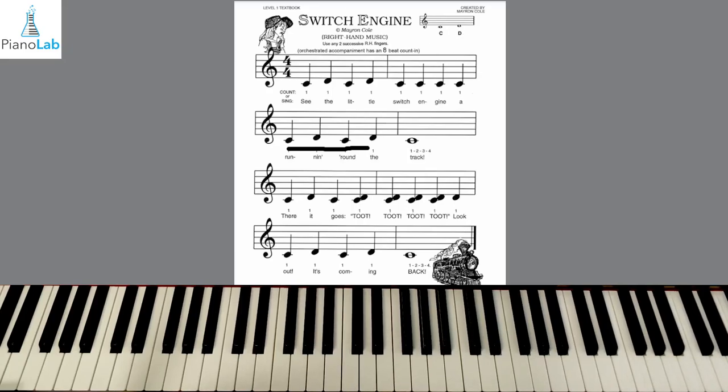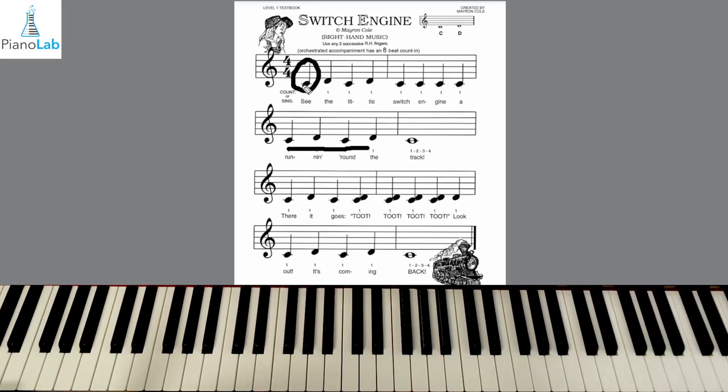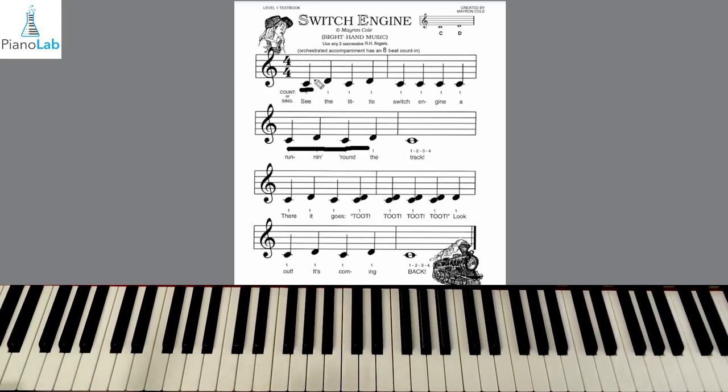Last song we looked at middle C on the staff, which is right here with our ledger line. Remember that word, the lines above and below the staff that we draw? A ledger line tells us where middle C is, right on our piano too.